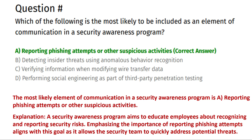Next question: which of the following is most likely to be included as an element of communication in a security awareness program? Option A: reporting phishing attempts or other suspicious activities. Option B: detecting insider threats using anomalous behavior recognition. Option C: verifying information when modifying wire transfer data. Option D: performing social engineering as part of third-party penetration testing.